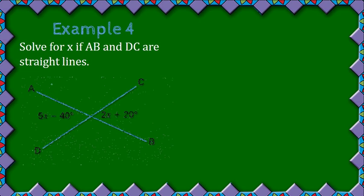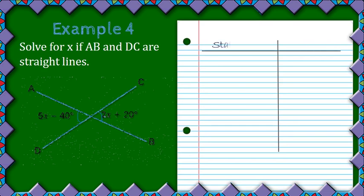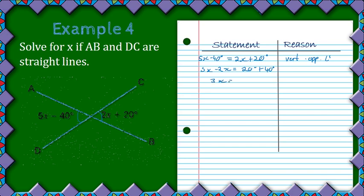For an example, AB and DC are straight lines, so the vertically opposite angles are equal. Writing statement and reason: 5X − 40° = 2X + 20°, reason: 'vertically opposite angles'. Solving for X: taking X terms to the left, 3X = 60°, then dividing both sides by 3 gives X = 20°.